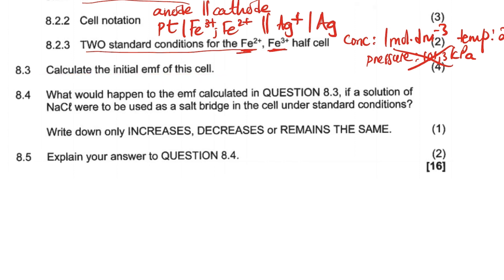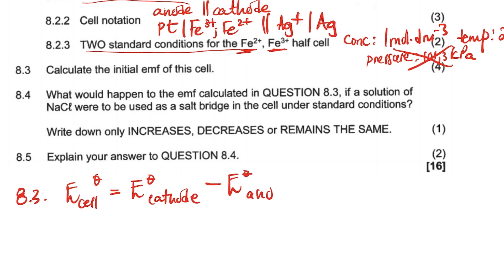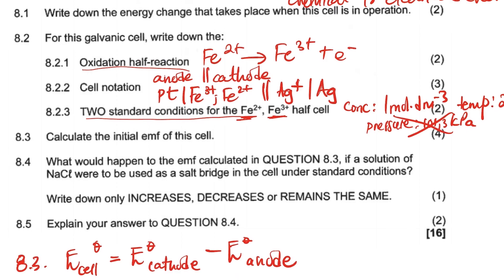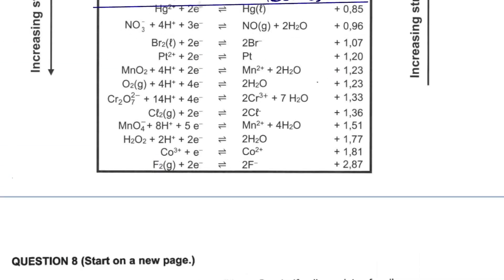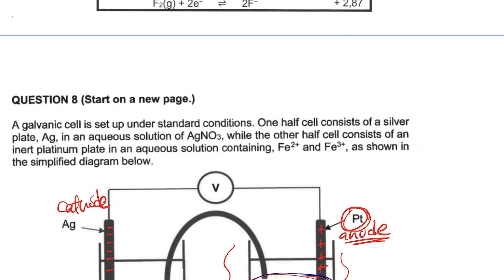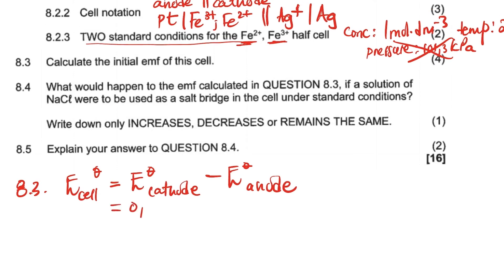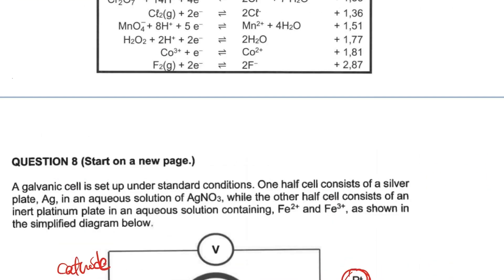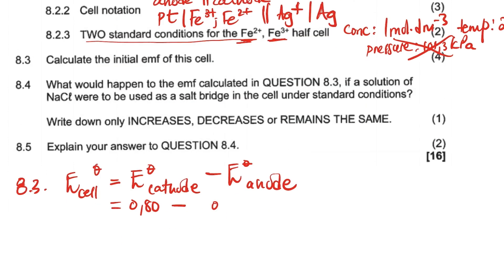For the initial EMF, we use the formula: E(cell) = E(cathode) − E(anode). The cathode is silver. Looking in the table, the standard reduction potential for silver is +0.80 V, and for the iron Fe²⁺/Fe³⁺ couple it is +0.77 V. So: E(cell) = 0.80 − 0.77 = 0.03 V. That is the EMF produced by the cell.